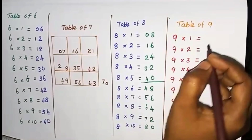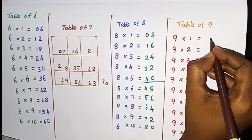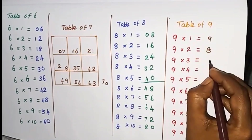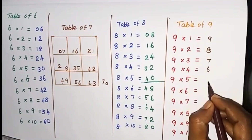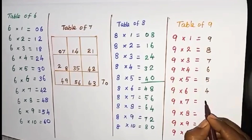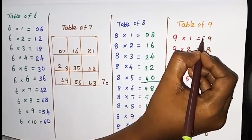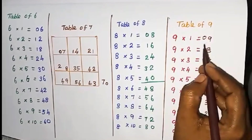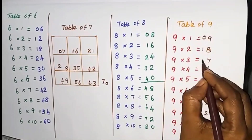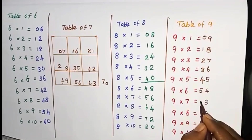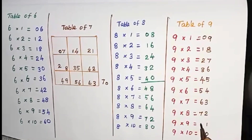Table of 9. Start from 9. Write the numbers in descending order: 9, 9, 8, 7, 6, 5, 4, 3, 2, 1, 0. Start from 0. Write the numbers in ascending order: 0, 1, 2, 3, 4, 5, 6, 7, 8, 9.